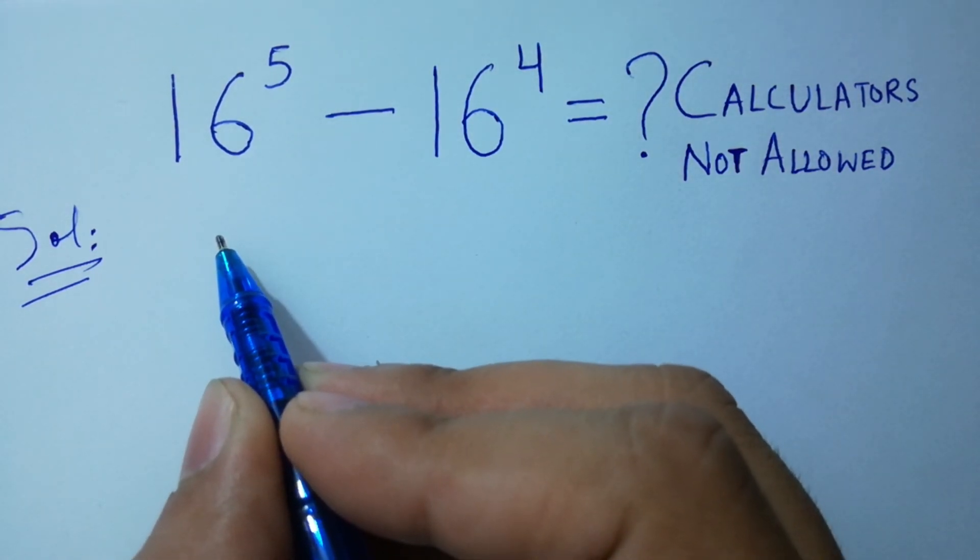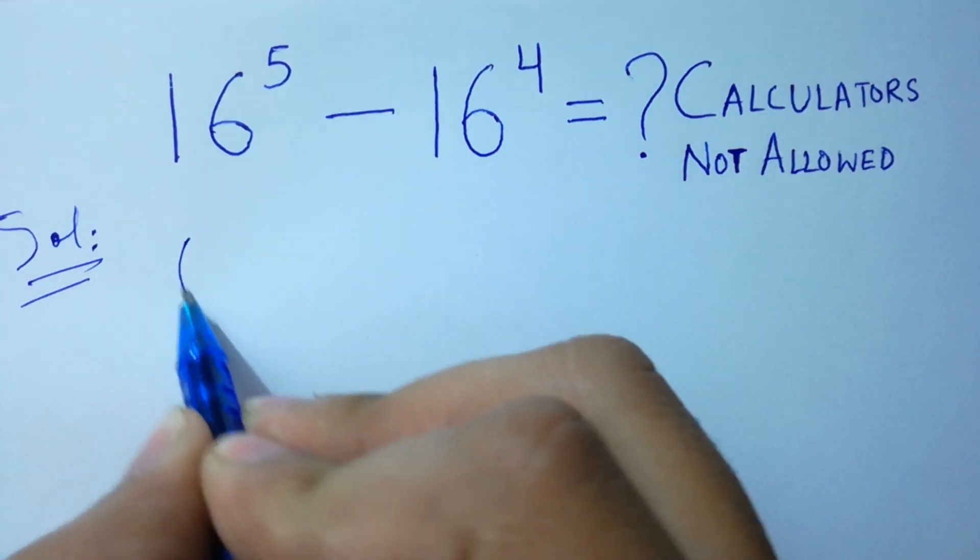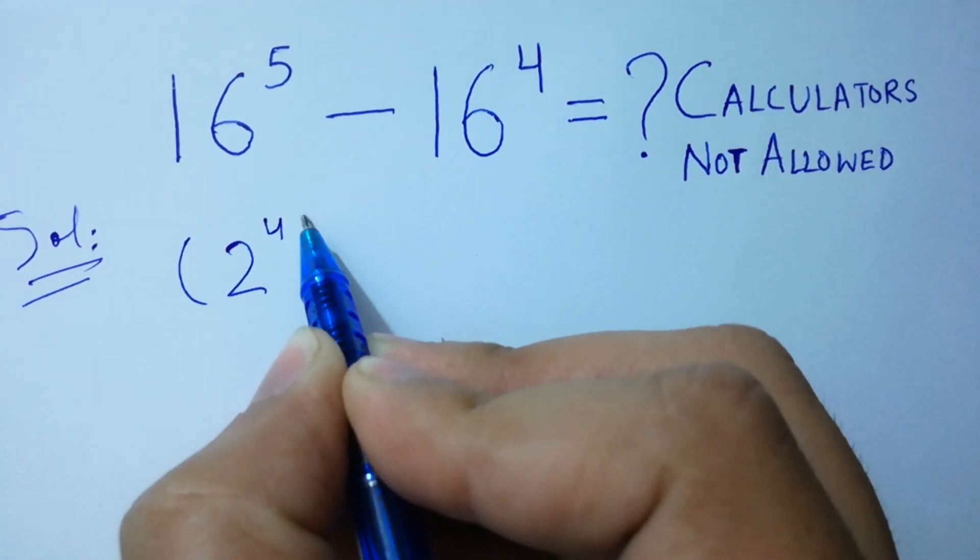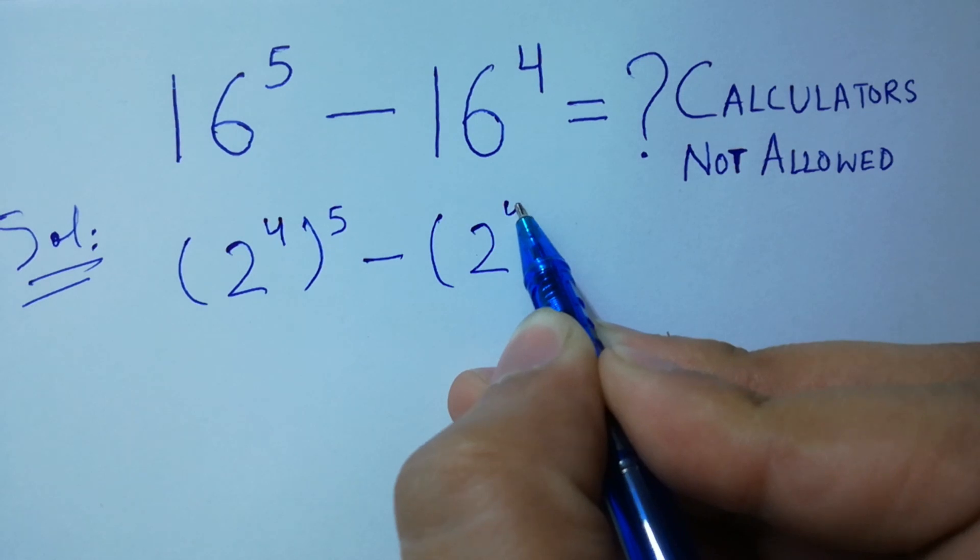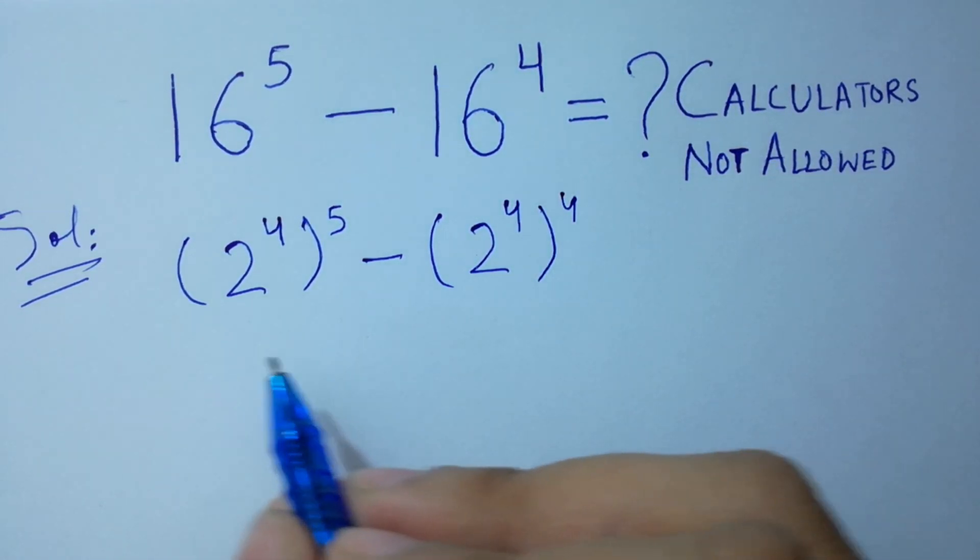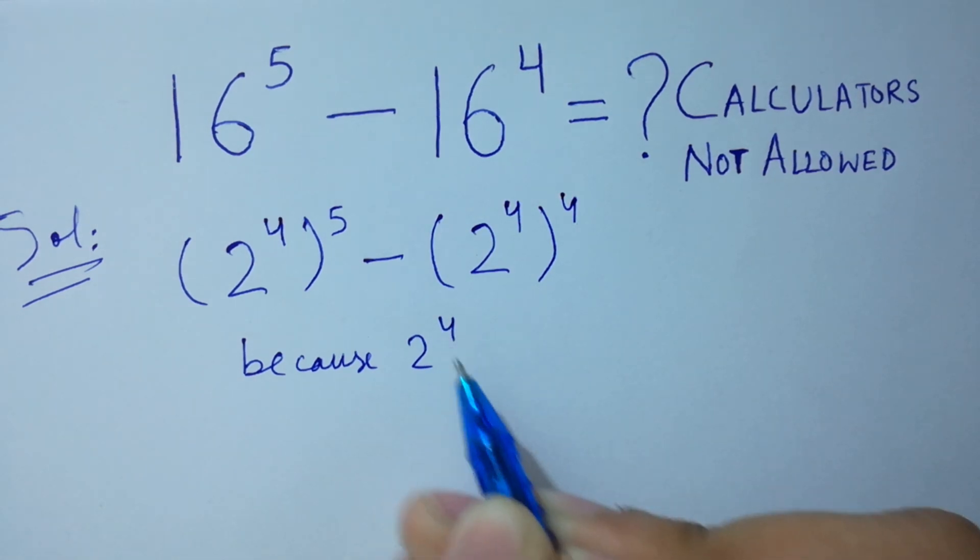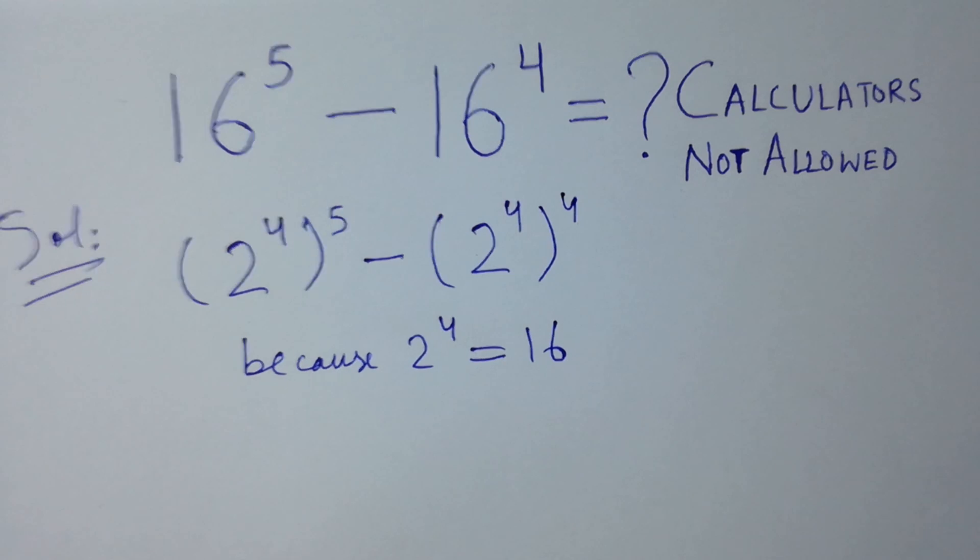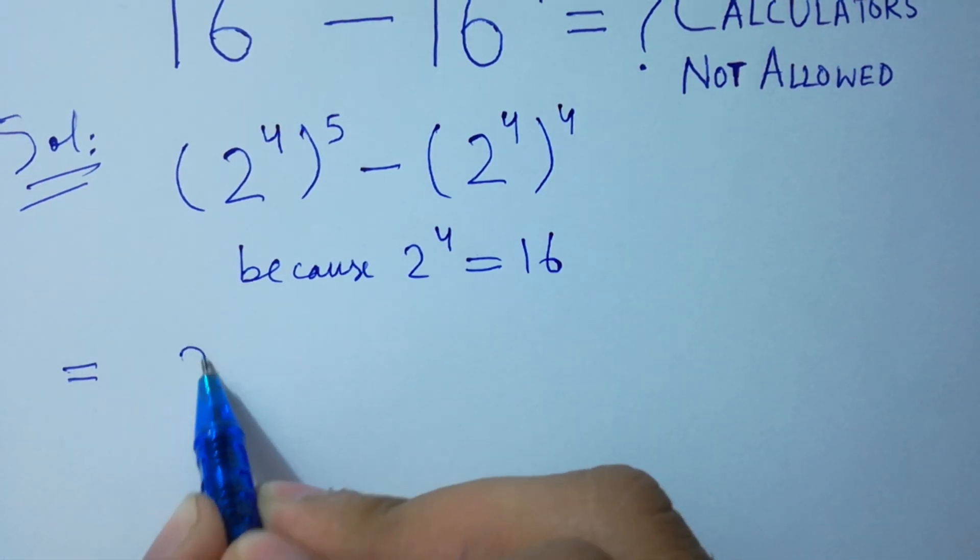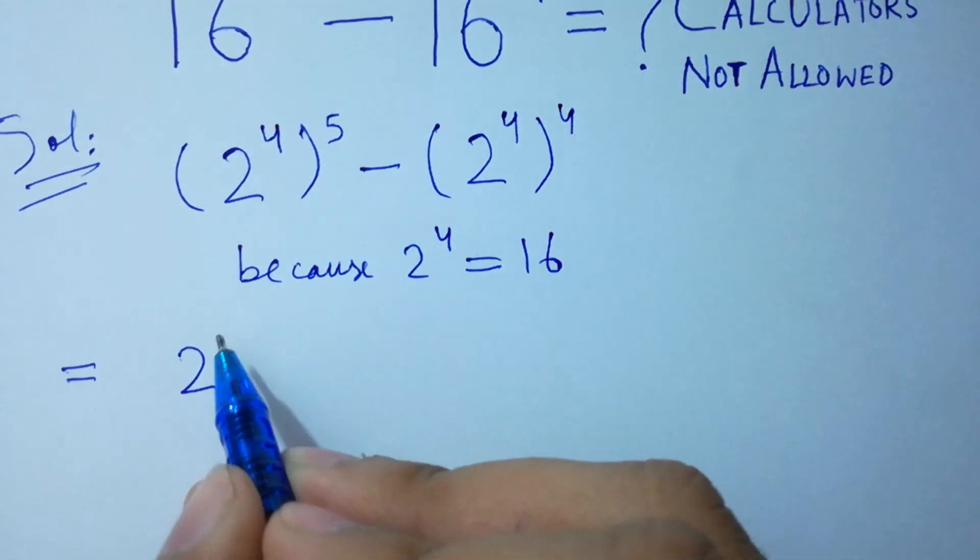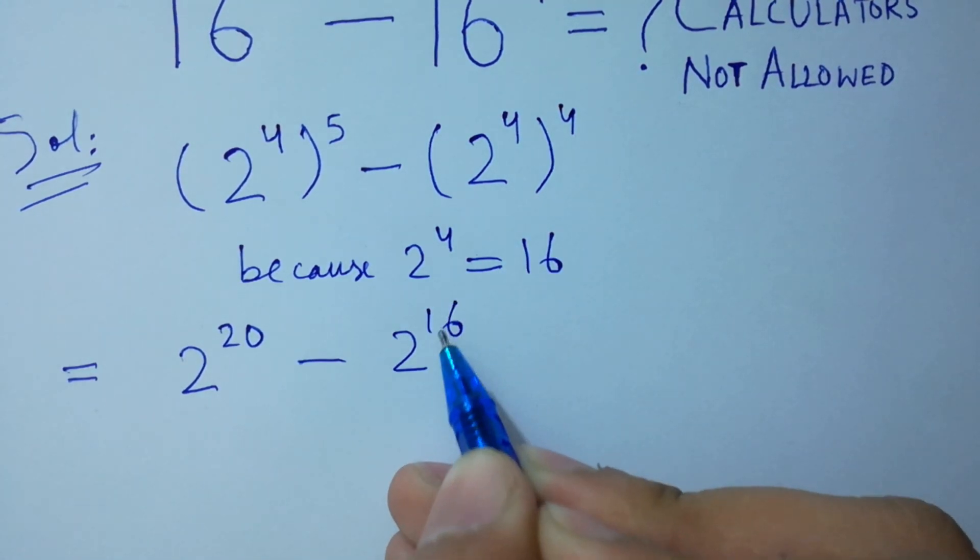Here, 16^5 - 16^4 is the same as (2^4)^5 - (2^4)^4 because 2^4 equals 16. This gives us 2^20 - 2^16. Clear?